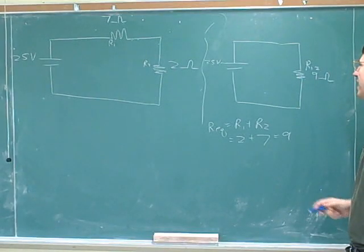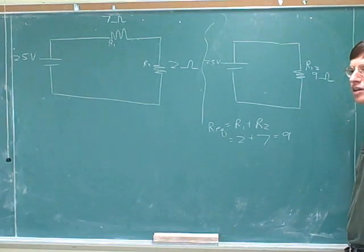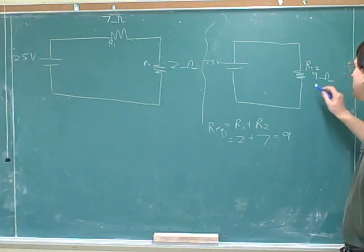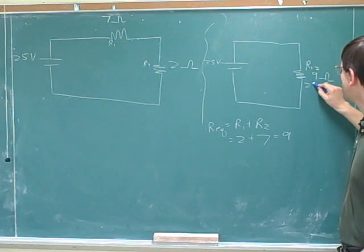Are there any other numbers that you can write down about this picture? Yeah, we know that the voltage of the resistor is equal to the voltage of the battery, so that would be 25 volts.